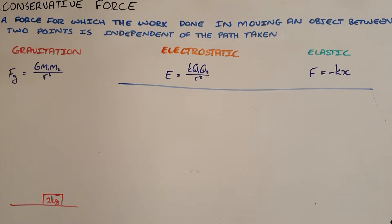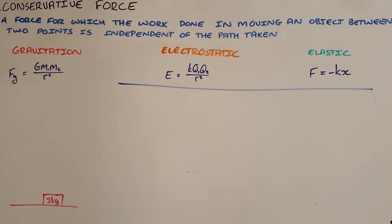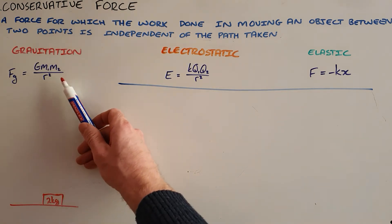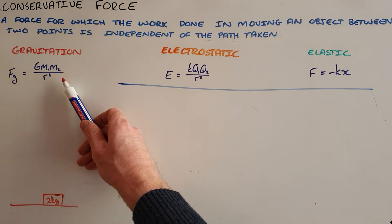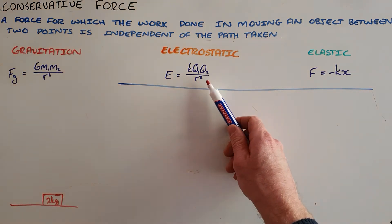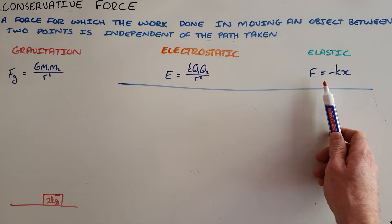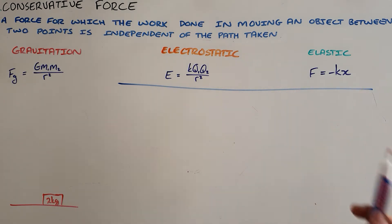A conservative force is a force for which the work done in moving an object between two points is independent of the path taken. The three most common conservative forces are the gravitational force between objects with mass, the electrostatic force between charged objects, and the elastic force exerted by a spring or an elastic.